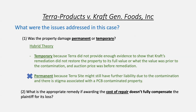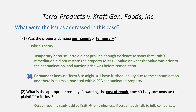However, due to the burden of proof and the evidence Terra needed to produce, the court went with temporary — Kraft already paid the cost of repair, so Terra has already gotten some remedy. The court acknowledged the cost of repair might not fully compensate Terra due to further liability or stigma, so it created a hybrid rule: cost of repair plus any remaining loss if the cost of repair fails to fully compensate. But there wasn't enough evidence of extra loss, so all of Terra's claims were denied.